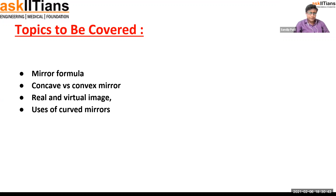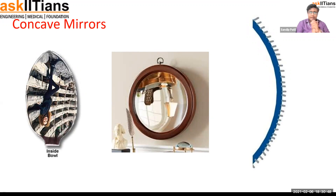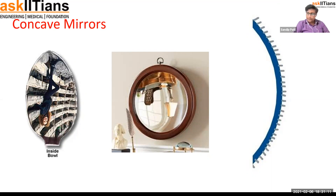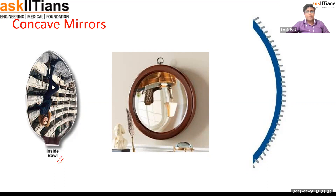First of all, what is a concave mirror? Here I can see some types of concave mirrors. Even if you have a spoon, you can try this at home. Take a spoon with a very good reflecting surface — a silver spoon works well. You can see your reflection in the concave surface of the spoon. The image becomes inverted, unlike in a plane mirror where your head is at the top.